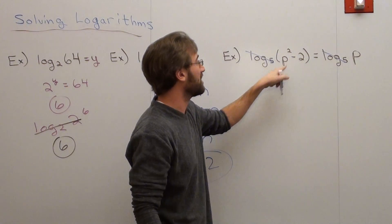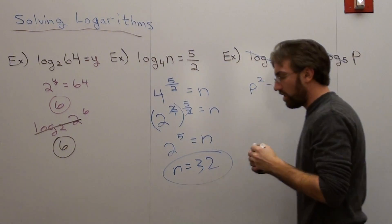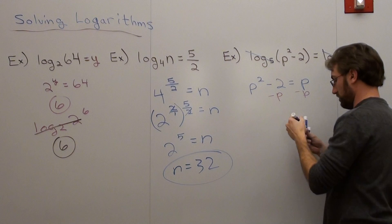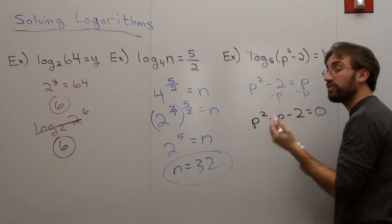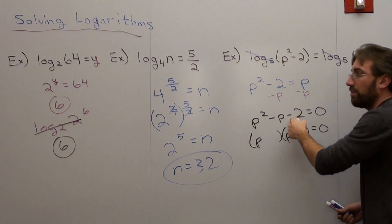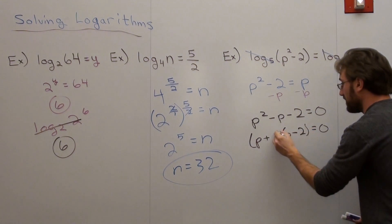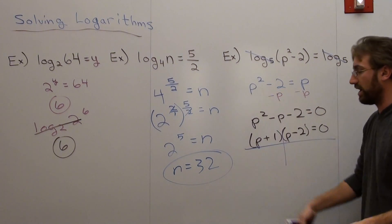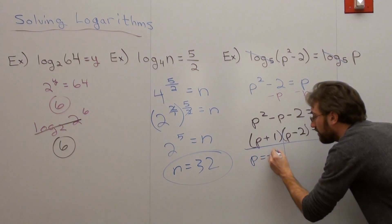So from there we'll go ahead and solve this. Cancel the logs: p squared minus 2 equals p. I want to solve this by factoring, so I'll subtract p from both sides, giving p squared minus p minus 2 equals 0. Factoring: p times p is p squared. A positive and negative make a negative — 1 times 2 is 2, and they add up to negative 1 — so it's negative 2 and positive 1. Using the zero product property, p equals negative 1 or p equals 2.